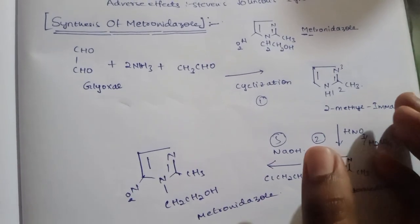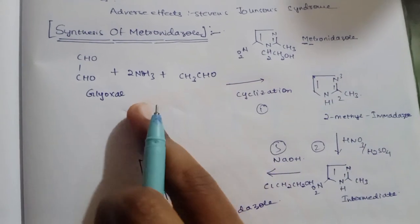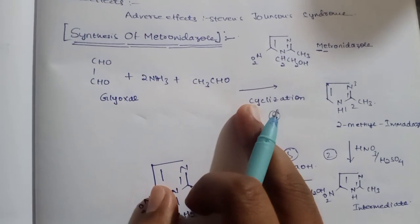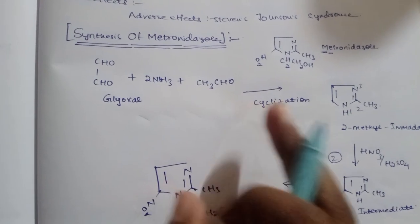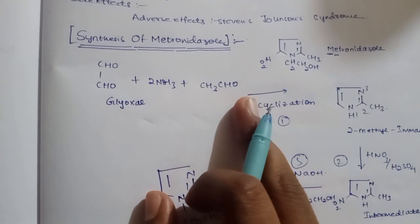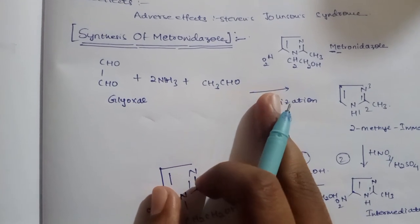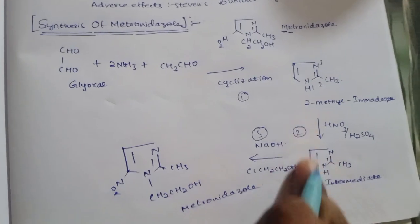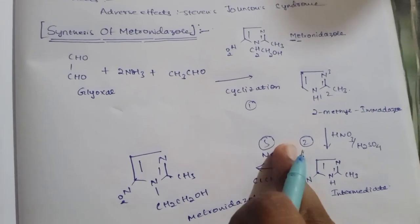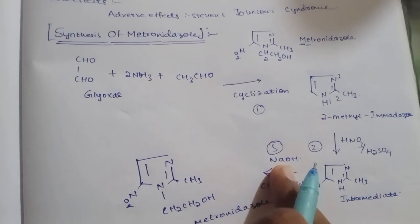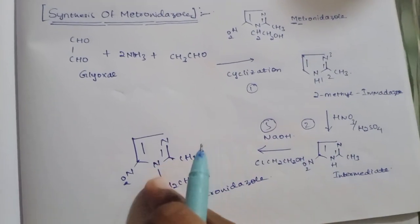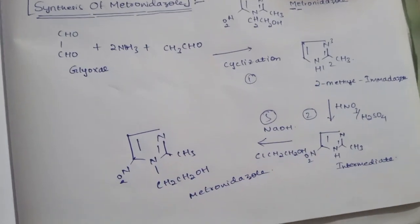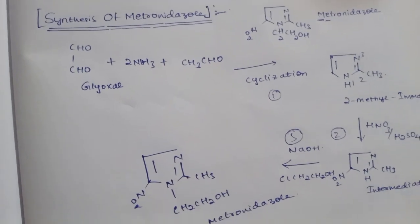To summarize the synthesis: starting compounds are glyoxal, 2NH3, and CH3CHO. Cyclization produces 2-methylimidazole. Nitration produces the nitro intermediate. Finally, reaction with NaOH (with the chloroethanol reagent) produces metronidazole.